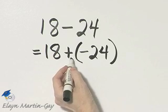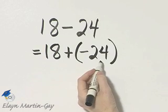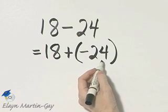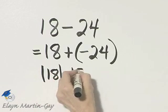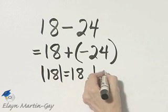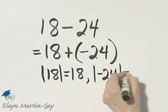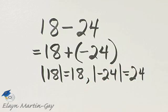Now, let's continue. I am now adding two numbers with different signs, so let's look at their absolute values. The absolute value of 18 is 18, and the absolute value of negative 24 is 24.